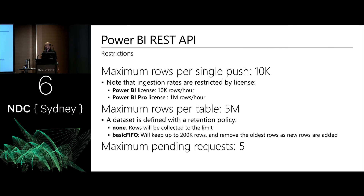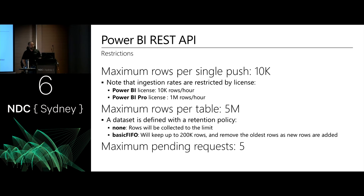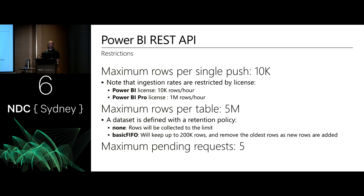Be aware of some restrictions. The maximum number of rows in a single push is 10,000. For the free Power BI license, you're given 10,000 rows an hour; on the pro license, it'll support up to a million rows an hour. Maximum rows per table is 5 million, unless you're in basic FIFO mode — that is 200,000 rows rolling forward. The maximum pending requests is five; if more than five are queuing, it'll error.